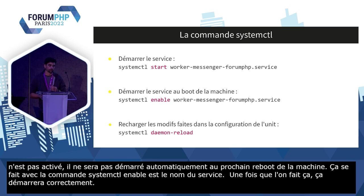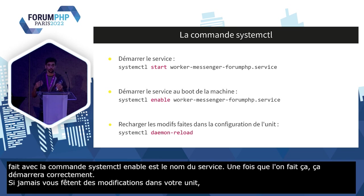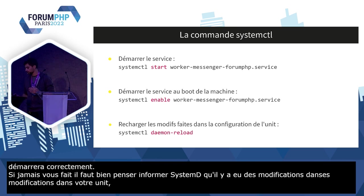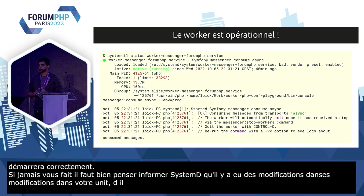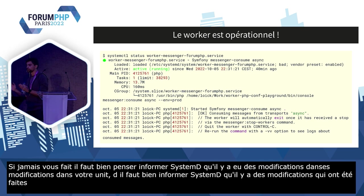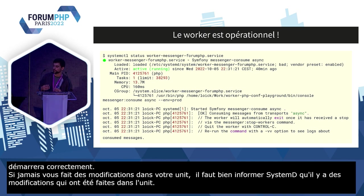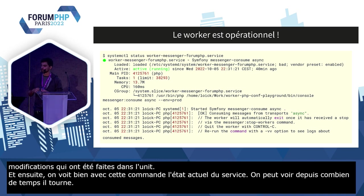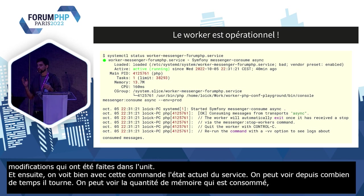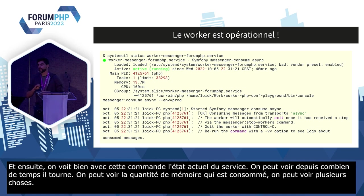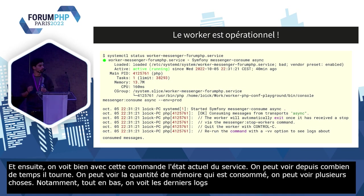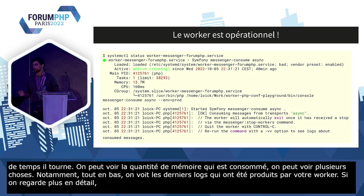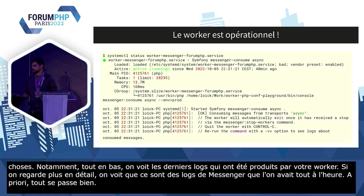Si vous faites des modifications dans votre unit, il faut bien penser à informer Systemd avec la commande systemctl daemon-reload. Ensuite, si on fait un systemctl status avec le nom de notre unit, on voit bien l'état actuel du service : qu'il est actif, en train de tourner, depuis combien de temps — 40 minutes dans l'exemple — la quantité de mémoire consommée, le PID du processus principal. On voit aussi les derniers logs produits par notre worker, en l'occurrence les logs de Messenger. Tout se passe bien.